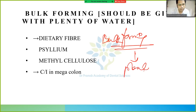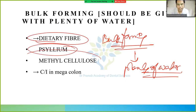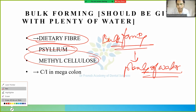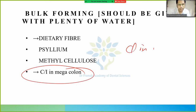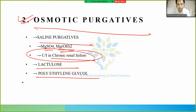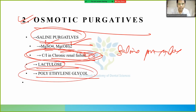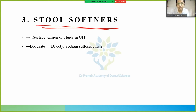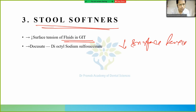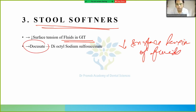Bulk-forming laxatives should be given with plenty of water. Examples are dietary fiber, psyllium, lactulose, and polyethylene glycol. Then there are stool softeners — they decrease the surface tension of fluids in the GIT. The example is docusate, full form: dioctyl sodium sulfosuccinate.